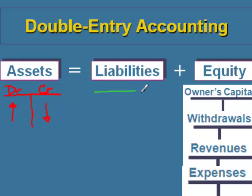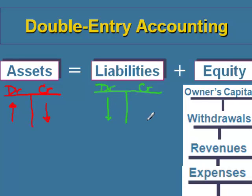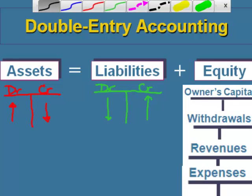If we have a look at a T-account for a liability, remember that debits are always on the left and credits are always on the right. With liabilities, debits make an account go down and a credit makes the account go up.